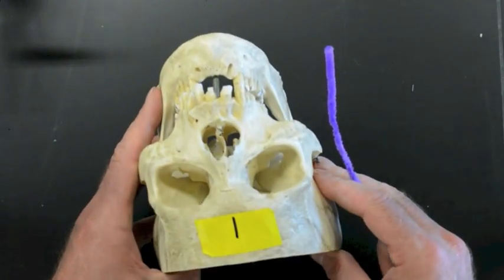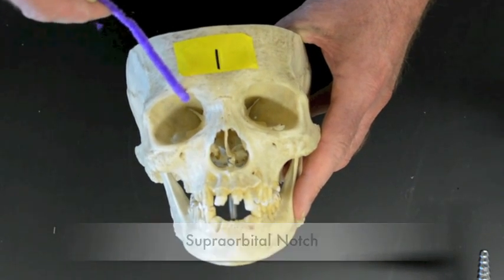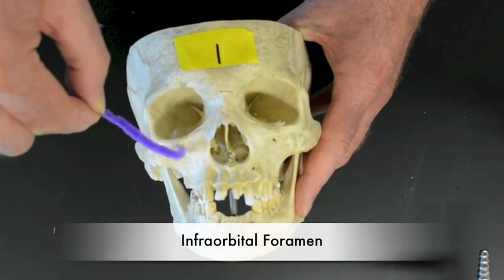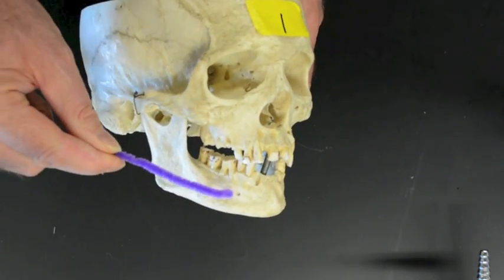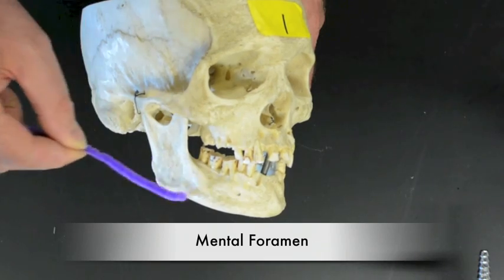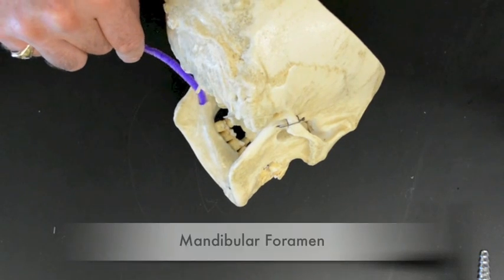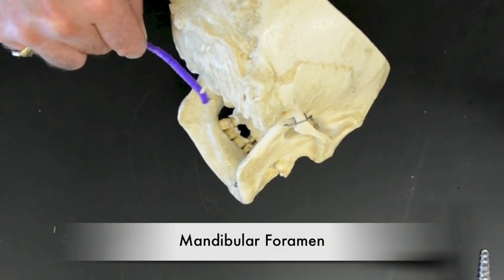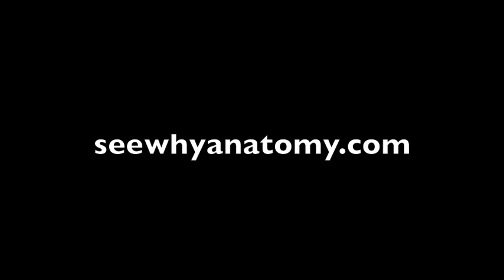And if we take an anterior view, we can see above the orbit of the eye we have the supraorbital notch, and then here we have the infraorbital foramen. On the chin, we have the mental foramen here. And then on the inside of the mandible, we have the mandibular foramen right here.